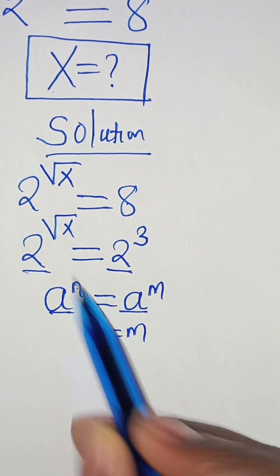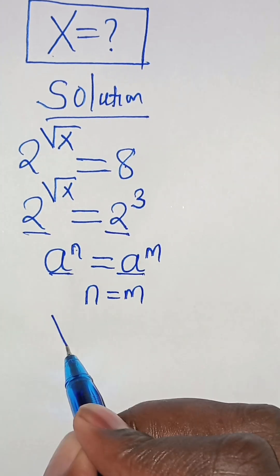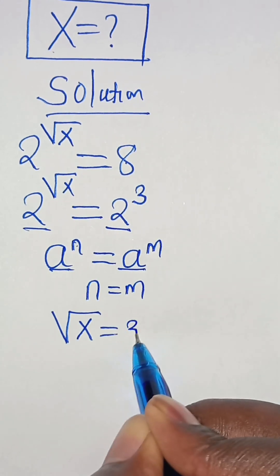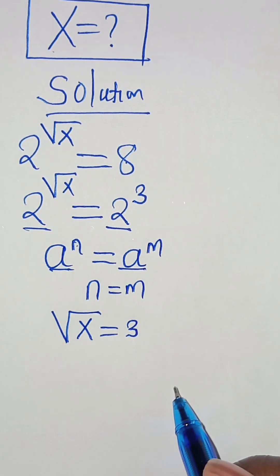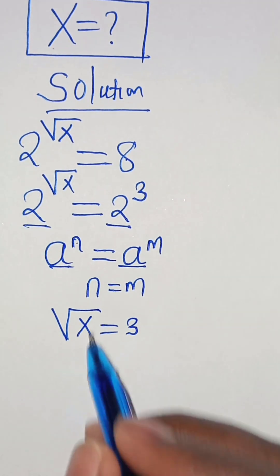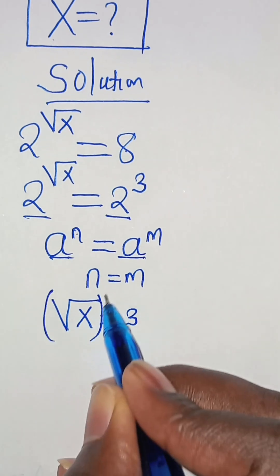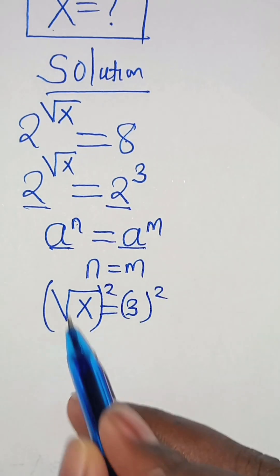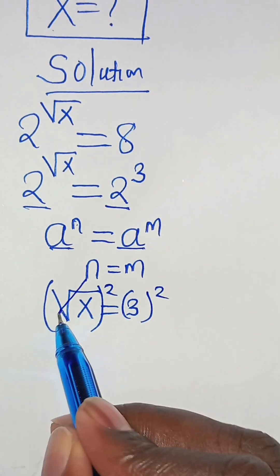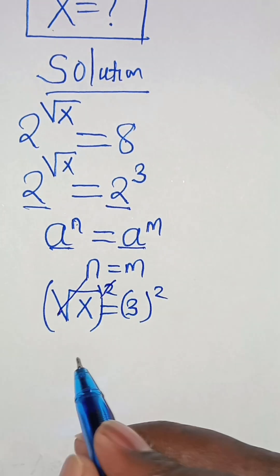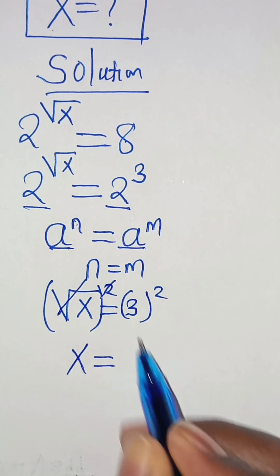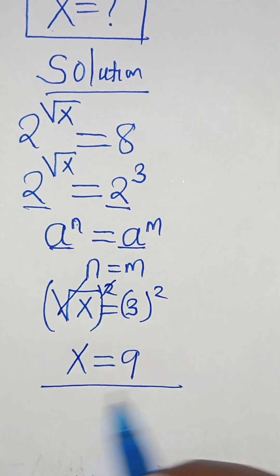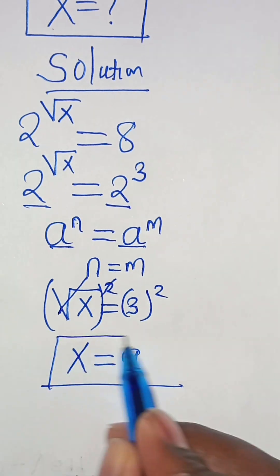Applying this property, we have square root of x equal to 3. To solve for x, we square both sides so that we can eliminate the square root sign, and x is equal to 3 squared, which is 9. This is the value of x.